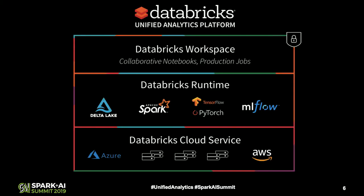With the Unified Analytics Platform, we try to provide the whole system — the end-to-end infrastructure that our customers need to be successful with machine learning. At the lowest layer, we have the DBX Cloud Service, which interfaces with the various cloud providers, acquires resources, configures them, and gives the user a cluster that is ready to be used. Inside that cluster is the Runtime — the Spark engine and all the other libraries and frameworks — and that's where the user code is executed.